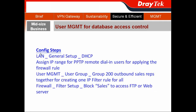The configuration step is: go to LAN channel setup and choose DHCP. You assign the IP range for those PPTP remote dialing users for applying the firewall rule. We know we have 200 outbound sales reps, so we can group them by user group so they can only follow one IP filter rule.